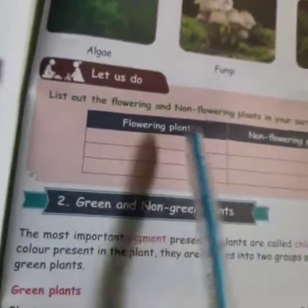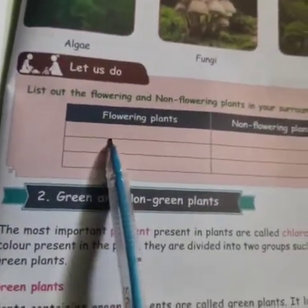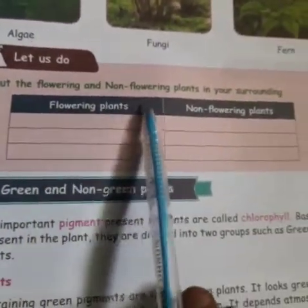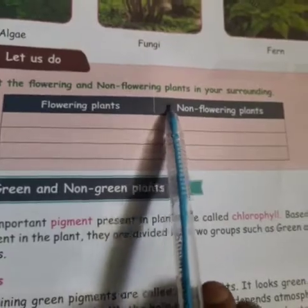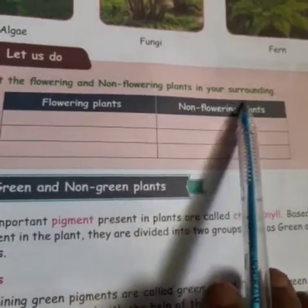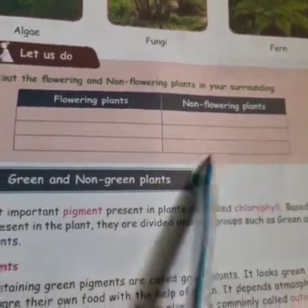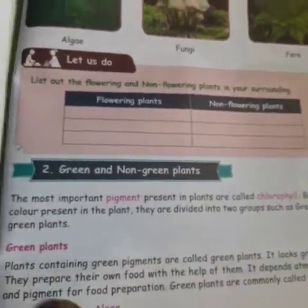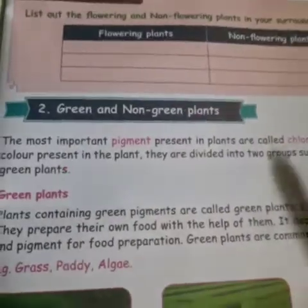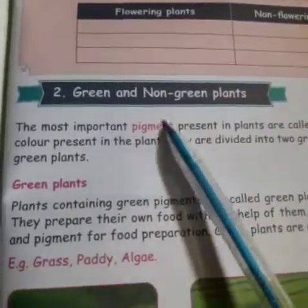Look at the board. Activity: List out the flowering and non-flowering plants in your surroundings — in your area, identify which are flowering and which are non-flowering plants and list them out.